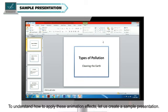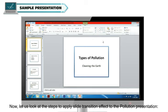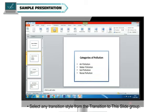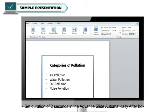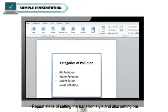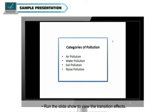To understand how to apply these animation effects, let us create a sample presentation. Here is a presentation on Pollution with 6 slides. Let us look at the steps to apply slide transition effects: click the second slide, open the Transition tab, select any transition style from the Transition to This Slide group, set a duration of 2 seconds in the Advanced Slide Automatically After box. This will advance your slide automatically after 2 seconds. Repeat steps for each slide, then run the slideshow to view the transition effects.